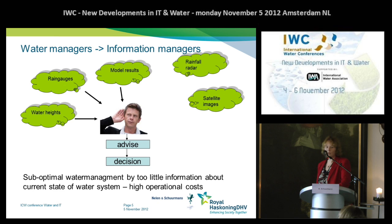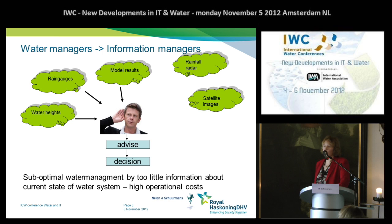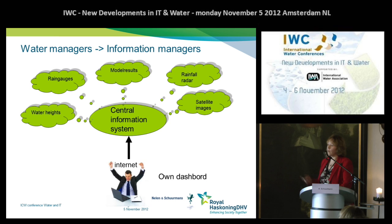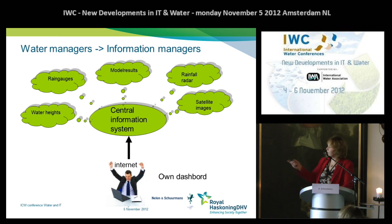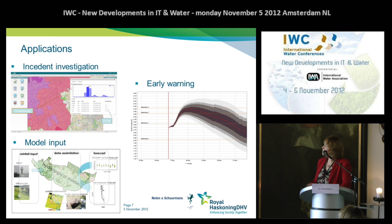I think that water managers are becoming more and more also information managers. With all those data, how do you know what kind of data you need? Often water managers have access to some data, but there are data they could use to improve their water management that they don't know about or cannot access. So I think there's suboptimal water management. What becomes more and more common is having a central information system which connects all those data and makes information from data. So people at water boards, for example, can have their own dashboard.